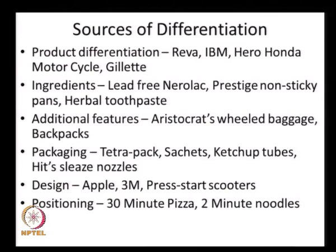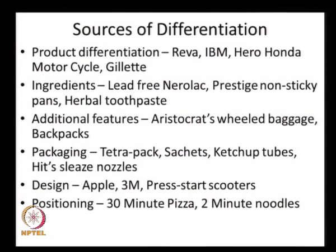Differentiation can also come from design capabilities — that explains why Apple is very strong, able to provide differentiation because of its capability to come out with new designs in its product offerings. Or 3M, or the electronic ignition scooters — the press-start scooters because of the electronic ignition design made TVS scooters and Kinetic Honda very popular. Or differentiation from positioning itself: 30-minute pizza delivery or Maggi's 2-minute noodles. Positioning is also a very strong source for differentiation.